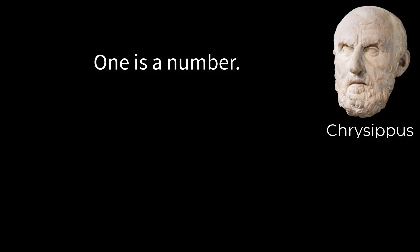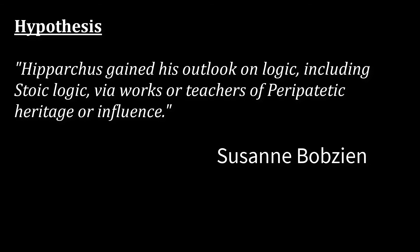Chrysippus told them they were wrong and insisted that one was a true number. Although Hipparchus got his mathematics right, the logician Suzanne Bobzine thinks he misinterpreted Chrysippus' Stoic logic. She hypothesizes that Hipparchus gained his outlook on logic including Stoic logic via works or teachers of peripatetic heritage or influence.